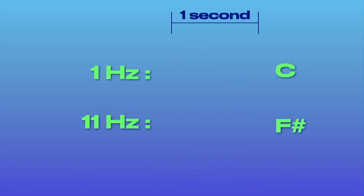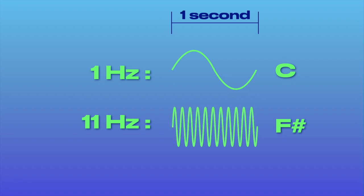If we compare C, the first harmonic, with F-sharp, the eleventh harmonic at 11 Hz, or 11 wave oscillations per second, we start to see something interesting.